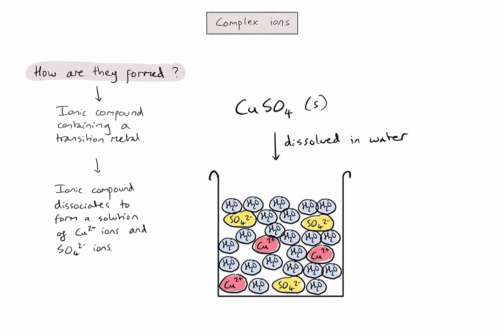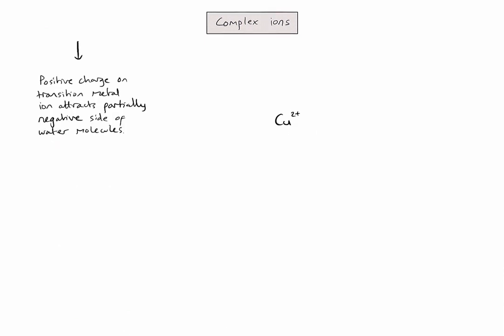Now we need to focus on what's happening to the transition metal ion, in this case the copper 2-plus ions. Because they have a positive charge, they're going to attract the negative side of polar water molecules, something like this. There's the copper ion in the middle, there's some water molecules. And notice how the partially negative side of the water molecule, or the oxygen side, is being attracted towards the positive transition metal ion in the middle.